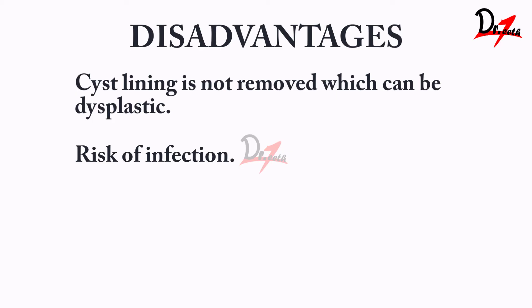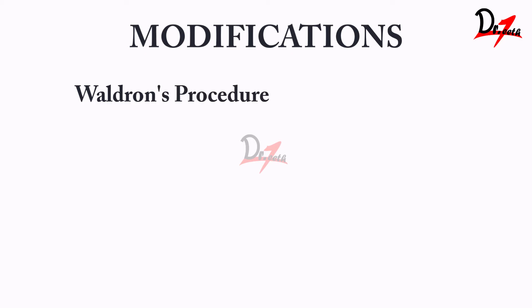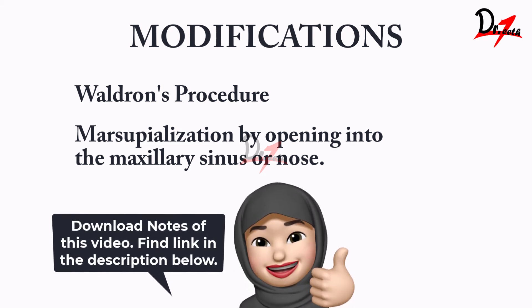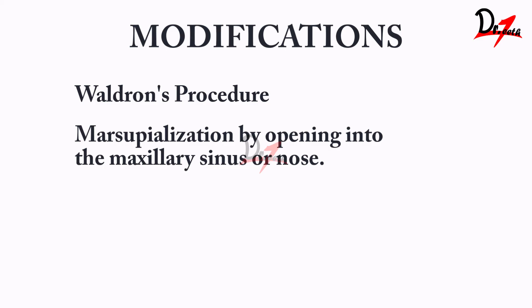Marsupialization has two important modifications. One is the Valed Runs procedure, where we do marsupialization followed by enucleation. The second one is marsupialization by opening into the maxillary sinus and nose. If you want me to cover that video as well, do let me know in the comment section below. Otherwise, in the next video we will be covering enucleation. I hope you found the video helpful — please like and share it with your colleagues. I will see you in the next video. Take very good care of yourself. Allah Hafiz.